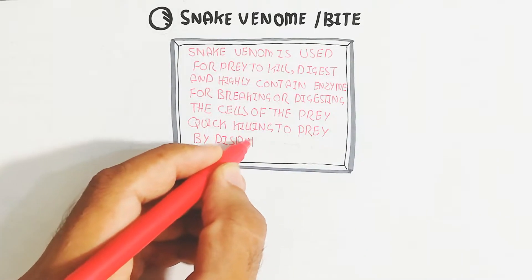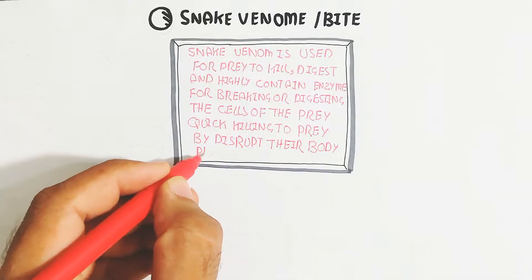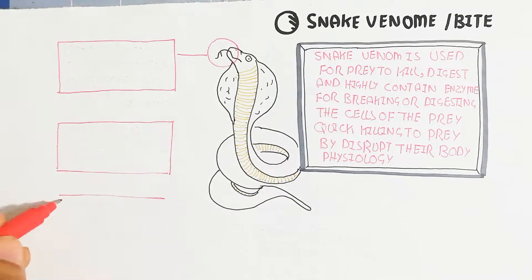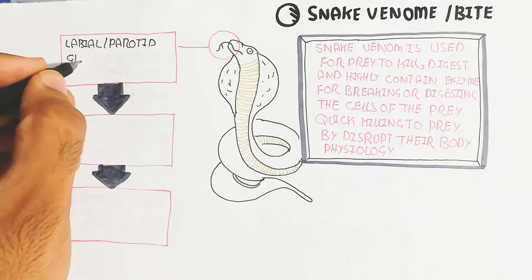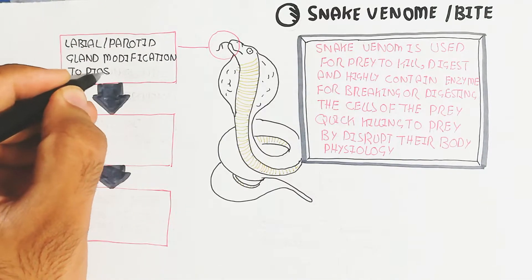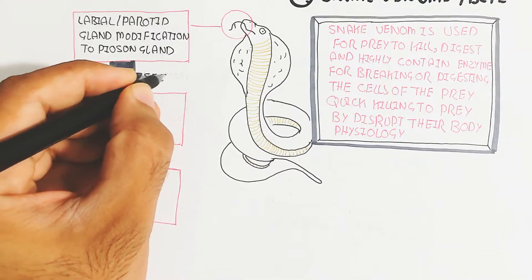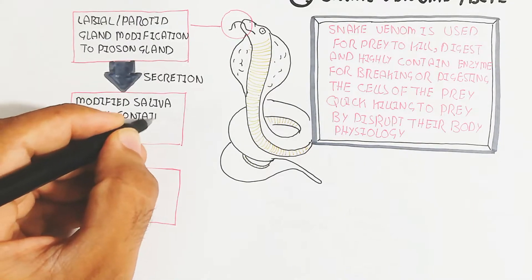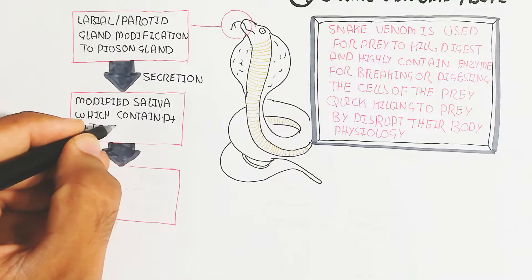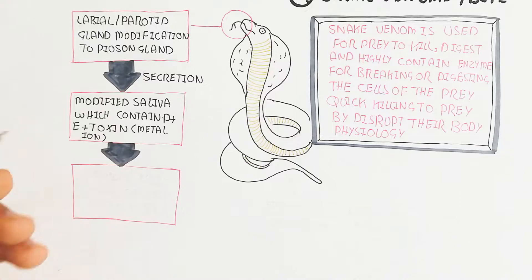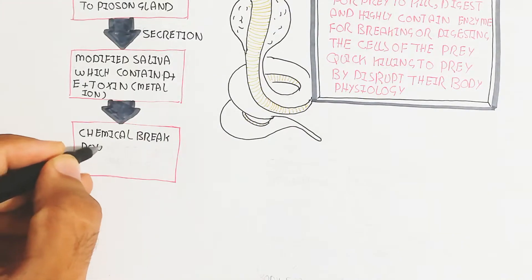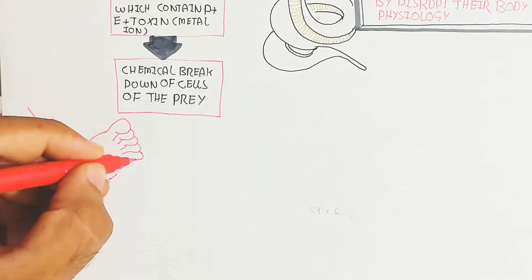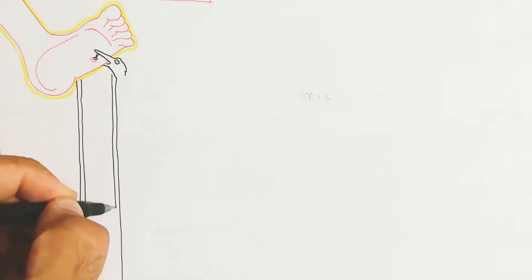The snake's saliva itself is not poisonous because it contains antibodies against its own saliva, so a snake biting another snake will not be affected. The labial parotid gland has been modified into a poison gland through evolution, and its secretion becomes modified saliva containing protein enzymes, toxins, metal ions, conjugated proteins, and chemicals that break down the cells of prey — similar to how our saliva contains amylase to break down starch.